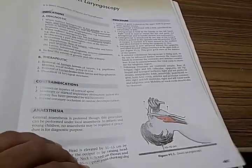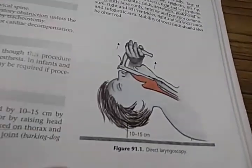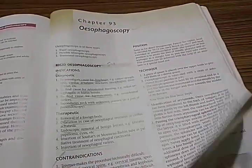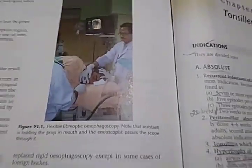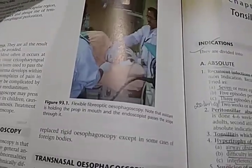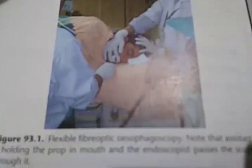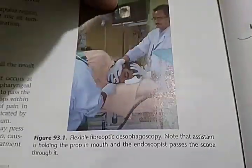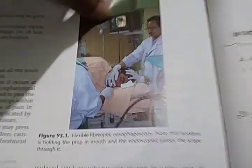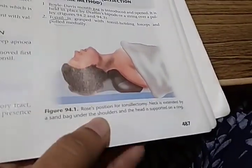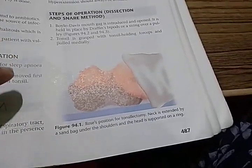Direct laryngoscopy is demonstrated. Then flexible fibre-optic esophagoscopy is shown with the patient's face to one side. Then tonsillectomy — all the instruments for tonsillectomy should be known, including Rose's position for tonsillectomy.